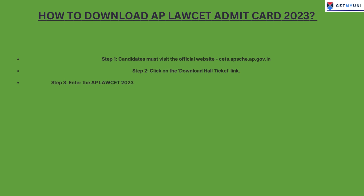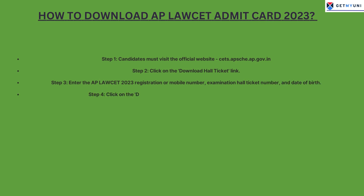Step 3: Enter the AP Lawsett 2023 registration number or mobile number, examination hall ticket number, and date of birth. Step 4: Click on the Download Hall Ticket button after entering the required details.